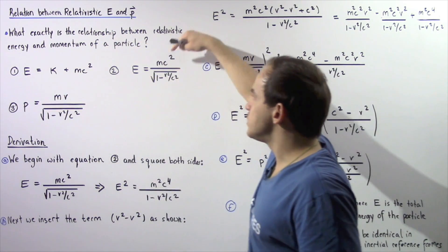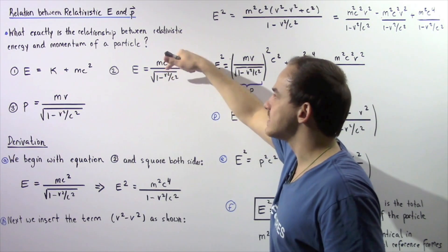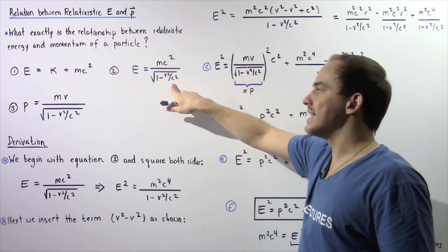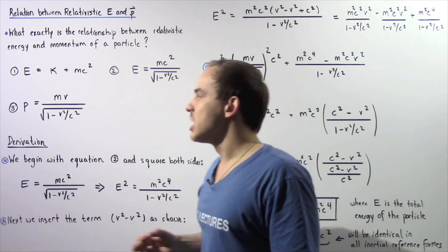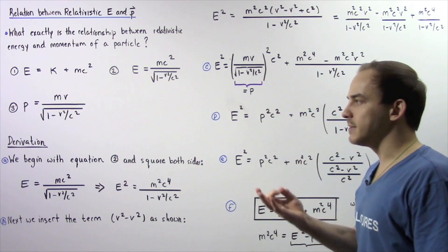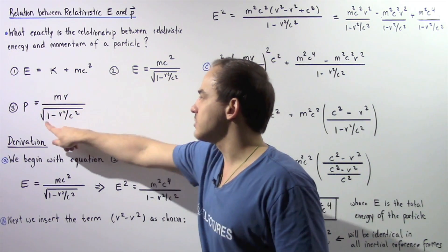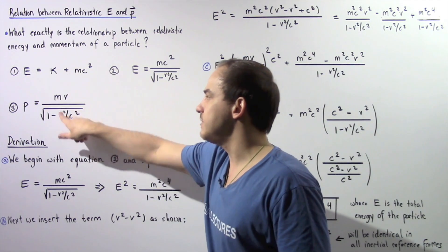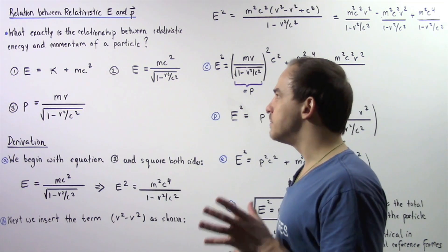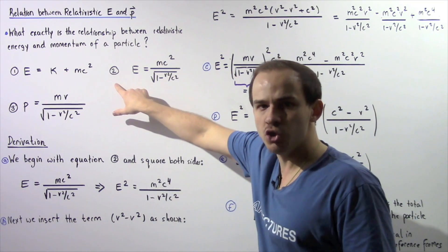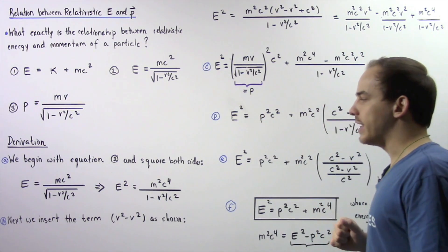Equation two: E is equal to mc squared divided by the square root of 1 minus v squared divided by c squared. Equation three gives us the relativistic momentum p of our particle: p is equal to m times v divided by the square root of 1 minus v squared divided by c squared.